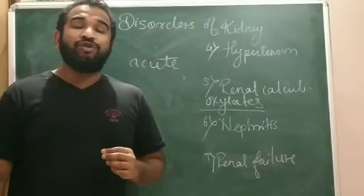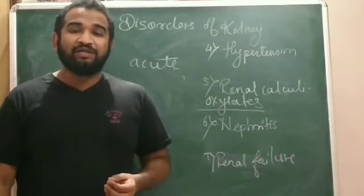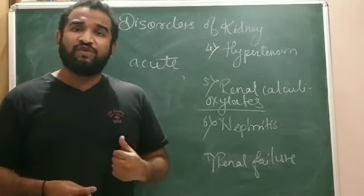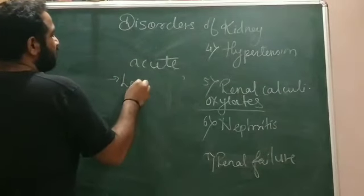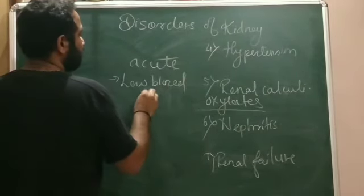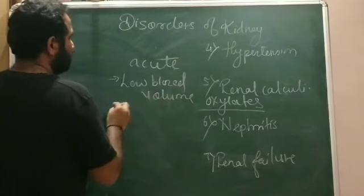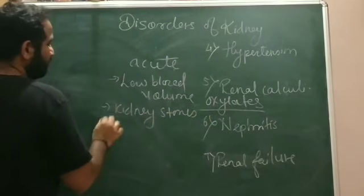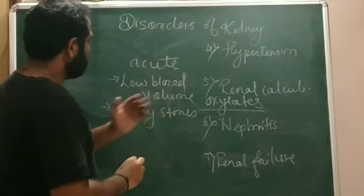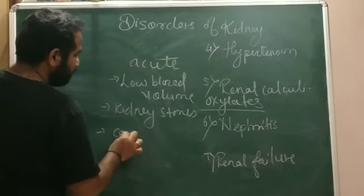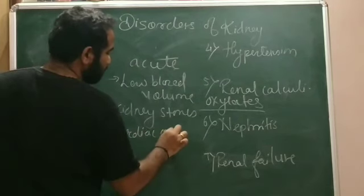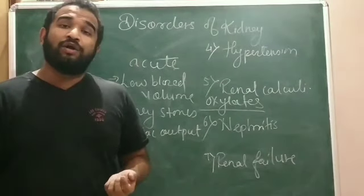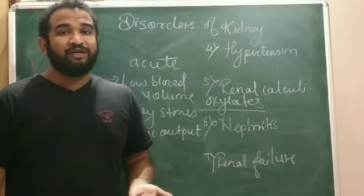Acute renal failure means both kidneys suddenly stop functioning. Some conditions that can cause renal failure include low blood volume, renal calculi or kidney stones, less cardiac output, infection of the kidneys, or damage in the renal tubules — all these conditions might lead to renal failure.